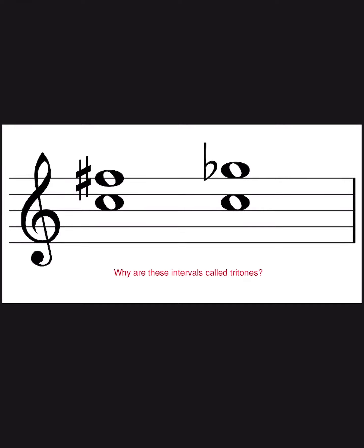The question here is: why are these intervals called tritones? These two intervals are enharmonic equivalents — they sound the same. The first one, C up to F sharp, is an augmented fourth. And then C up to G flat is a diminished fifth. They look a little bit different on the page, but enharmonically they sound the same.